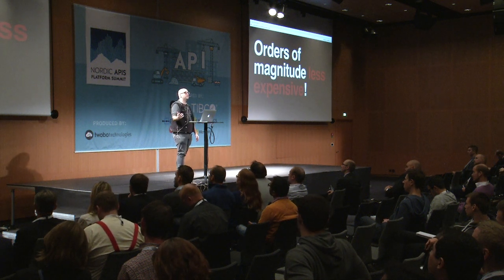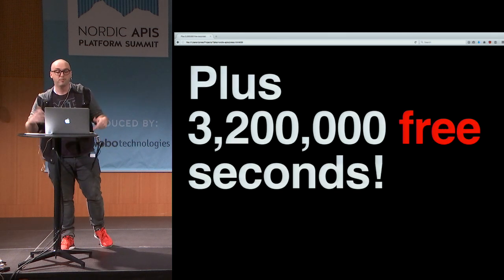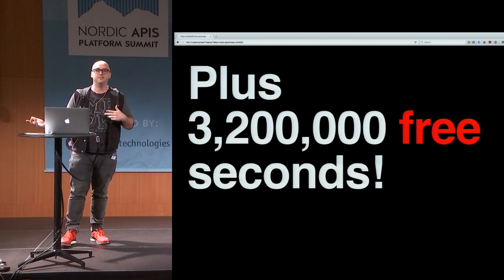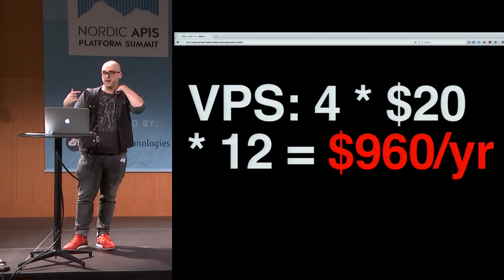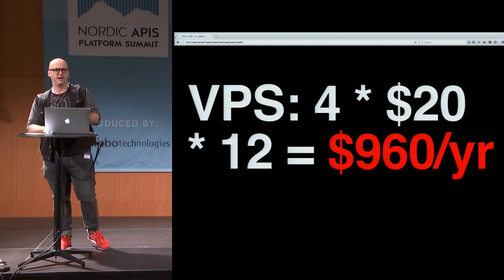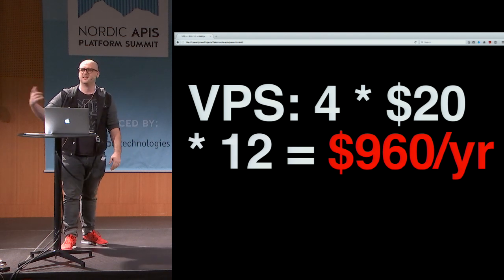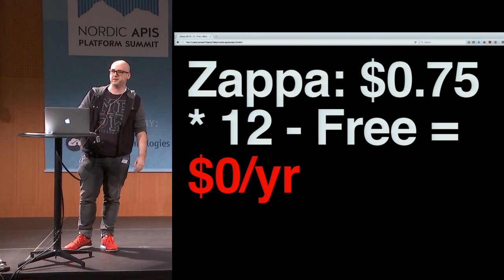It's also orders of magnitude less expensive. You pay by the millisecond — it's 0.00002 micro cents per millisecond. Plus, if you're a first-time Amazon customer, you get 3 million free seconds, so if you're using this for small projects or internal APIs, it's basically free. For my own personal projects, I had four VPS boxes at $20 a month on DigitalOcean, paying about a grand a year just to keep those online and keep them patched. I converted them to Zappa and saved $1,000 a year out of the box.